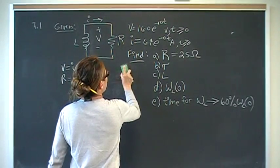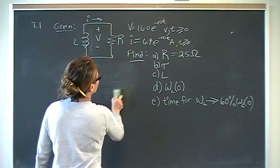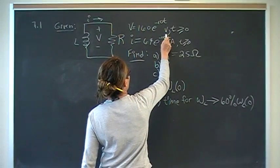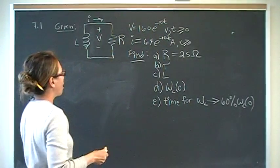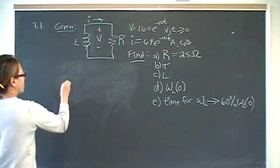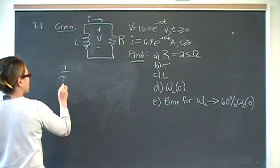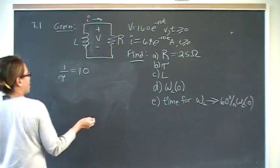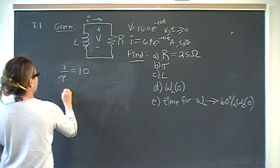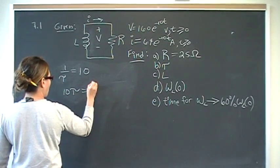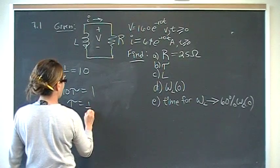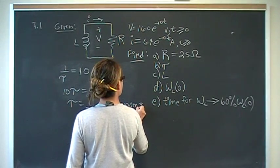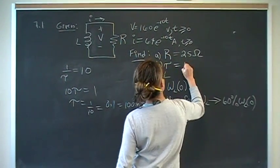And so for part B, remember that the format of the exponent in the voltage and the current functions take the form of 1 over tau. So knowing that, we say 1 over tau is equal to 10. So therefore, 10 tau is equal to 1, and tau is equal to 1 over 10, which is equal to 0.1, which is equal to 100 milliseconds. So our time constant is equal to 100 milliseconds.